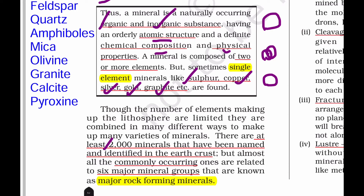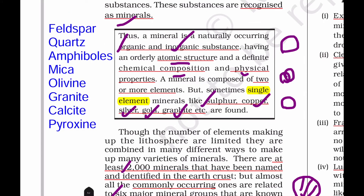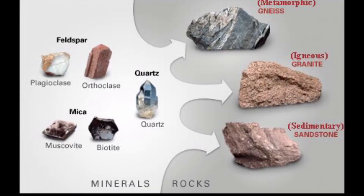Now, there are 2,000 minerals in our earth's crust. But for those minerals found in rock form, there are 6 major minerals: feldspar, quartz, amphiboles, mica, olivine, calcite, and pyroxene. All these minerals are found in rock form. On the left side you can see minerals, and minerals are found in the rock form. There are three types of rocks: metamorphic rock, igneous rock, and sedimentary rock.